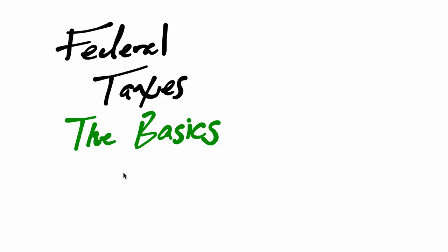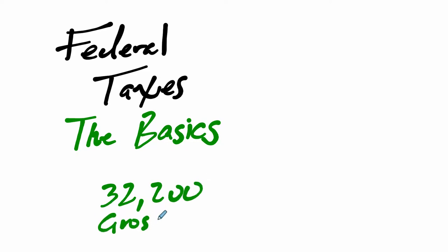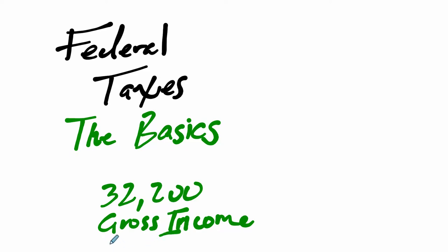Let's say you have an annual income of $32,200. This is your annual income, referred to as your gross income. This is the money that you have coming in throughout the whole year, and what you want to figure out is what are you going to pay in federal taxes? How do you calculate it, and how does this relate to what other incomes are out there?